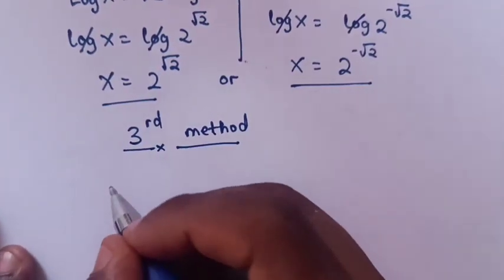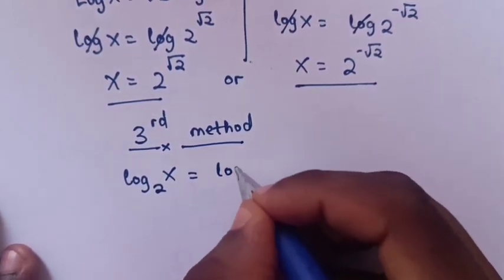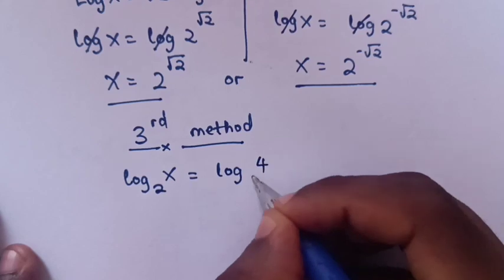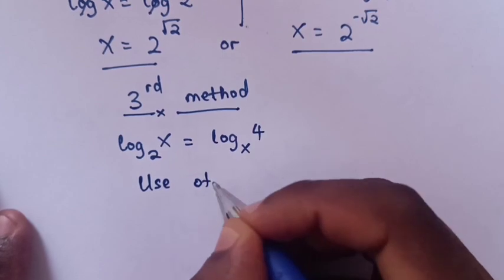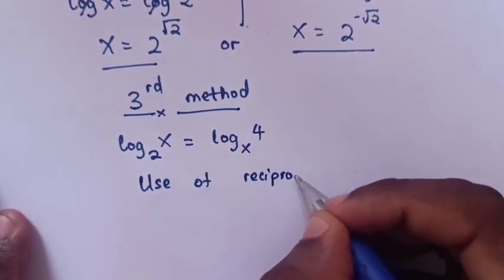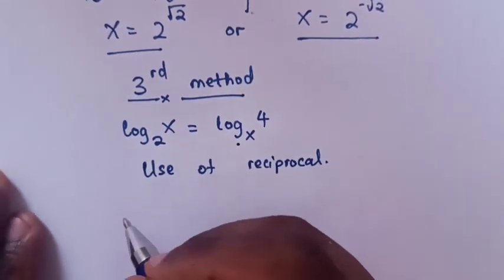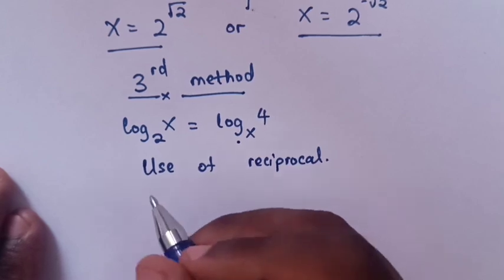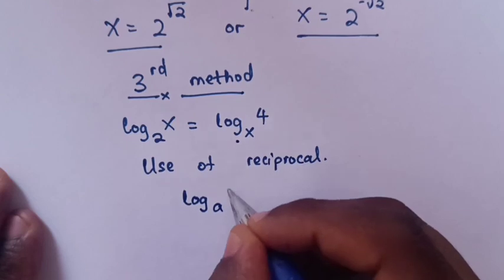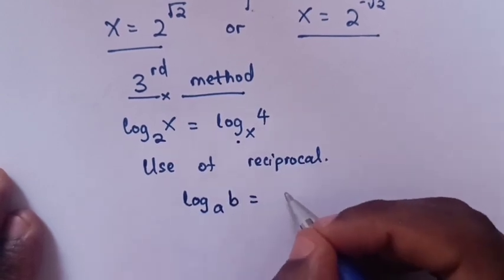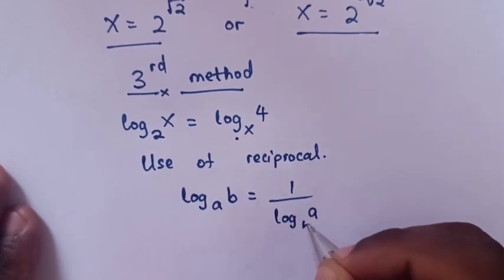Now let's go to the third method. From our question, log x base 2 equals log 4 base x. In this method, we will use the reciprocal method, where log b base a equals 1 over log a base b.